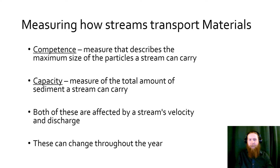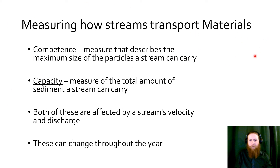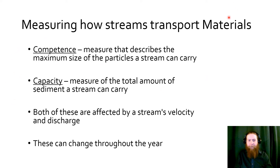When measuring how streams transport materials, there are two related but different concepts: competence and capacity. Competence is the maximum particle size a stream can carry; capacity is the total amount of sediment a stream can carry. A stream can have small competence but large capacity — it can still carry a lot of stuff even if the individual pieces aren't very big. Both competence and capacity are affected by velocity and discharge: more water flowing faster means you can carry more and carry larger. These numbers change throughout the year — during flooding, the stream has more water, flows faster, and carries larger and more material.